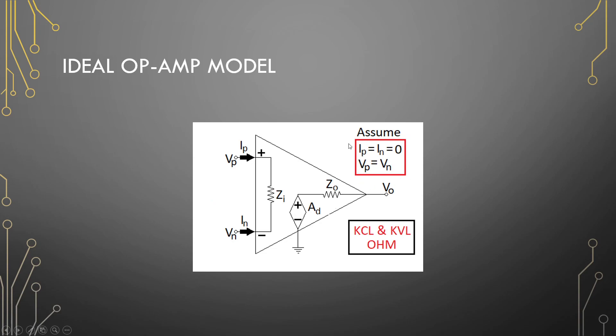So when you need to derive an equation after applying negative feedback to an amplifier like this, we assume that the current going in is zero. We assume that the two voltages are the same, and for the rest we can just use Kirchhoff's current law, Kirchhoff's voltage law, and Ohm's law.